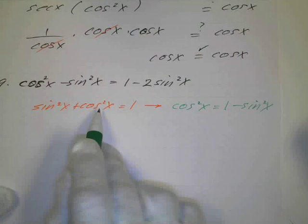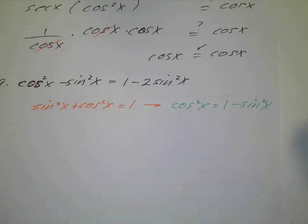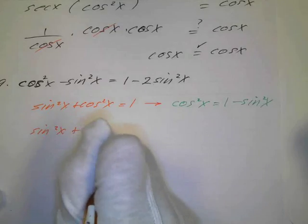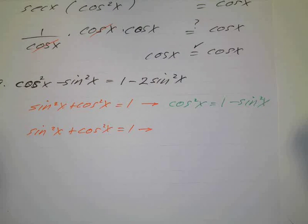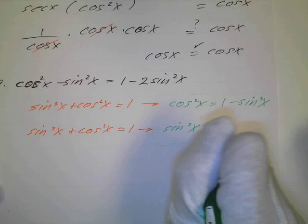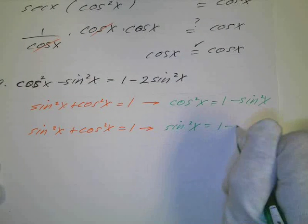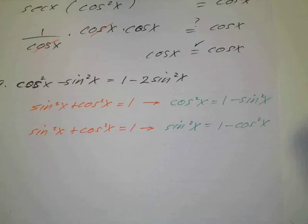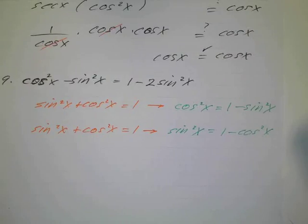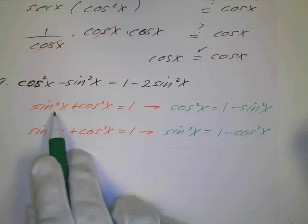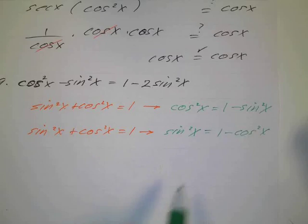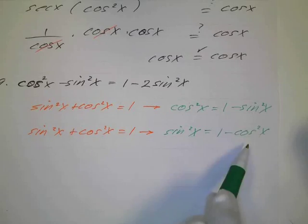You just look at this and subtract sine squared from both sides and you've got that. In the same manner, sine squared of x plus cosine squared of x equals 1 also implies that sine squared of x equals 1 minus cosine squared of x. So these are so easy — jot these down and add them to your identities. These are so basic because you just subtract one term from both sides.